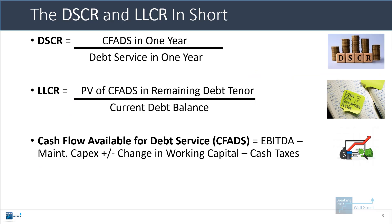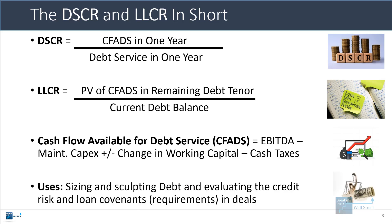The cash flow available for debt service has different components, but at the minimum it's usually EBITDA minus maintenance CapEx, plus or minus the change in working capital, minus cash taxes. You mostly use the debt service coverage ratio and the loan life coverage ratio to size and sculpt debt.